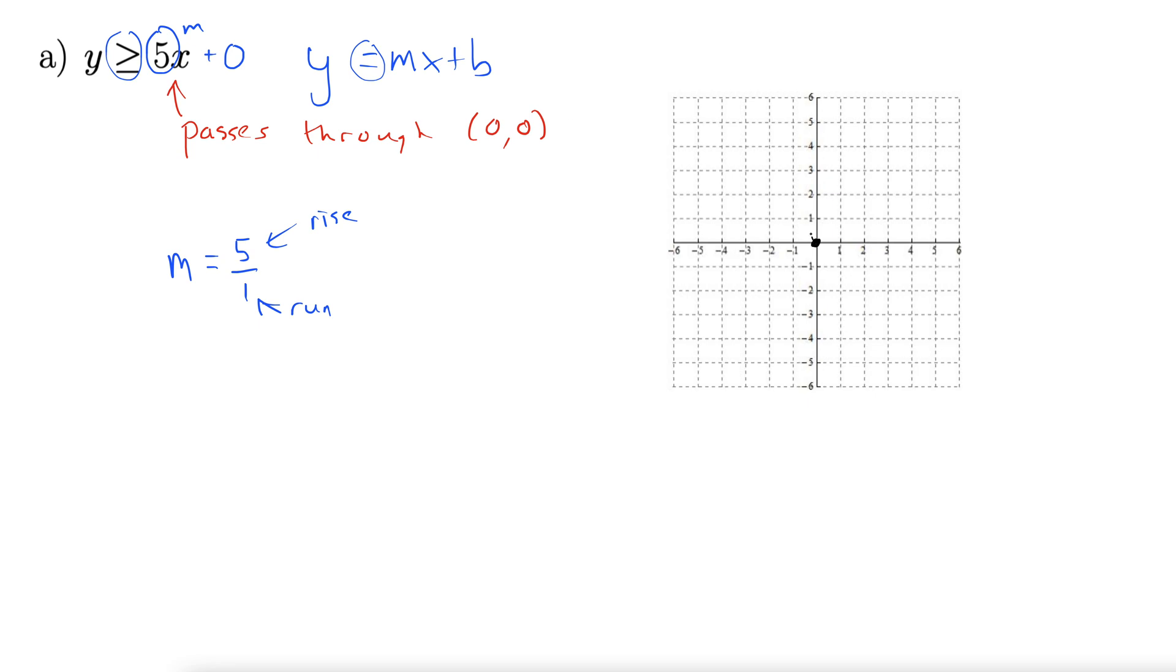So we're starting here. We go 1, 2, 3, 4, 5, up to 5, and then over 1 to the right. Great. So here we go.